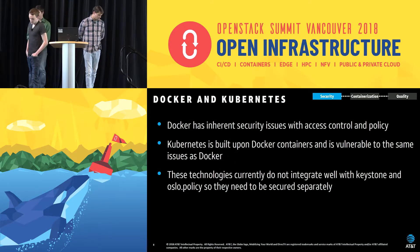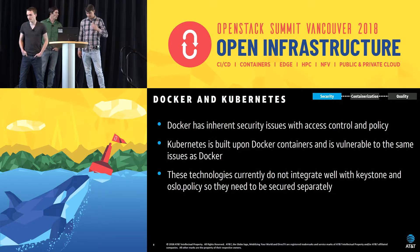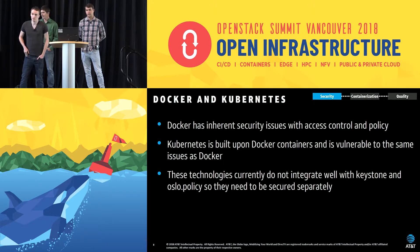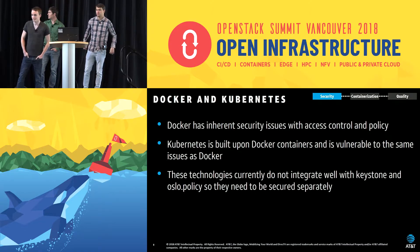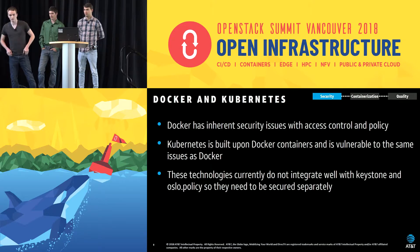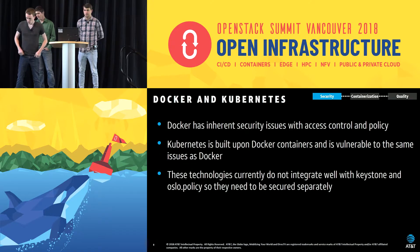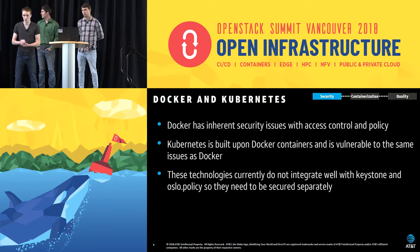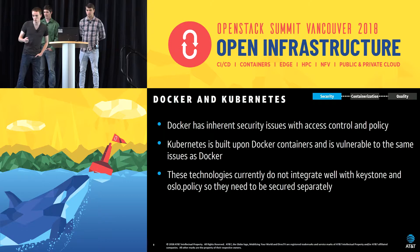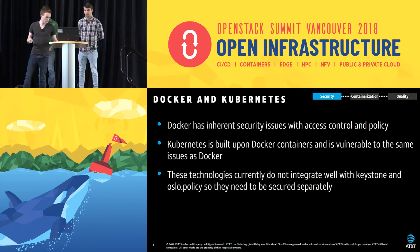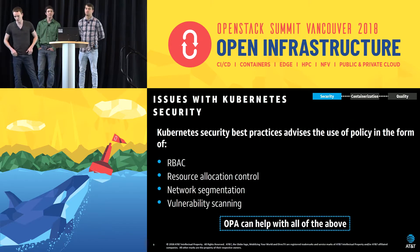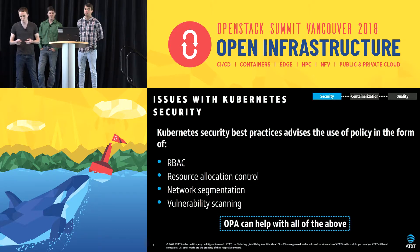One of the main inherent security issues with Docker and Kubernetes is the very default policy. By default in Kubernetes, someone can simply run kubectl delete pods, which if you're running a huge cloud with a Kubernetes control plane you really don't want to happen. By using OPA you can block off anyone from doing that except a very select person. However, when you're running Kubernetes and OpenStack together, the policy between them doesn't naturally fit. By rerouting all policy enforcement to OPA you can have a potential solution, though through OpenStack you will need to use Oslo policy and Keystone for enforcement. Kubernetes best security practices include using RBAC, allocating resources, network segmentation, and vulnerability scanning — these are all things OPA can help you with.